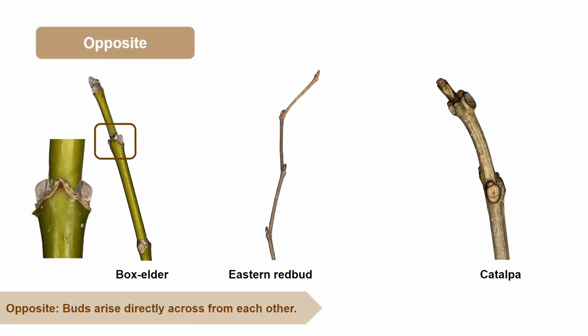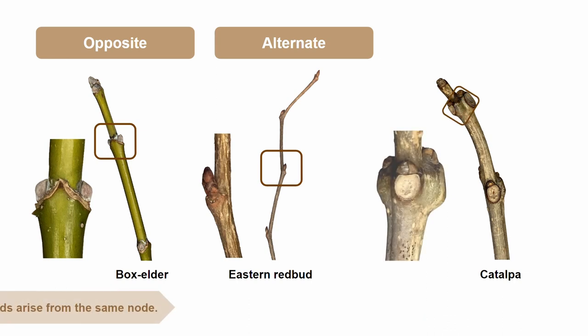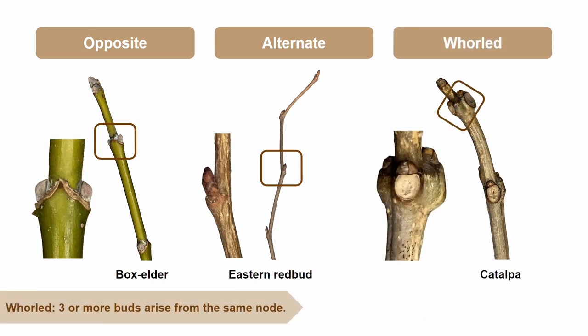An example of an opposite arrangement is the buds on a box elder twig — the buds are directly across from each other on the same node. The second common arrangement is called an alternate arrangement. An example of an alternate arrangement would be a redbud tree, which has staggered buds that are not directly across from each other and are on separate nodes. There is a third, less common bud arrangement called whorled. An example of a whorled arrangement is the buds on a catalpa tree, which have three or more buds that arise from the same node.